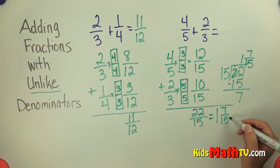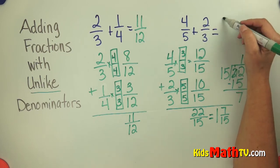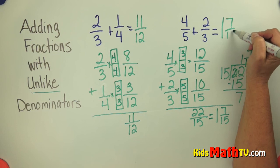Again, I need to check, can I simplify this? Is there a number that will divide both 7 and 15 evenly? There is not. This is in lowest terms or simplified. So the answer to 4 fifths plus 2 thirds is 1 and 7 fifteenths.